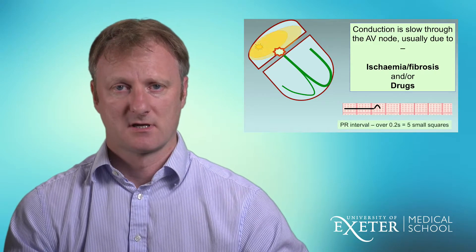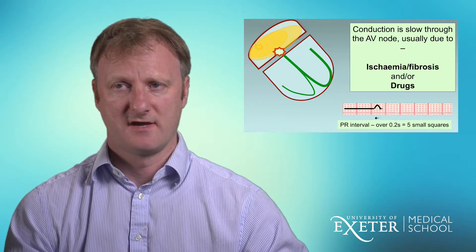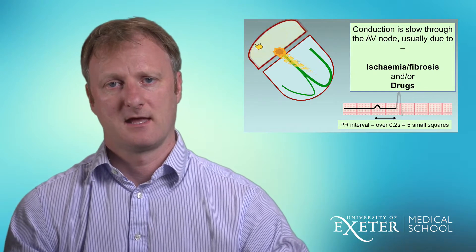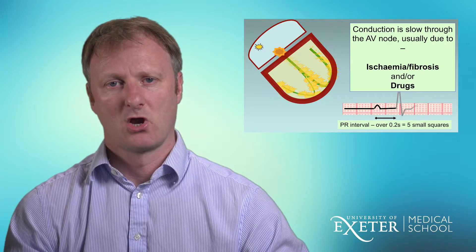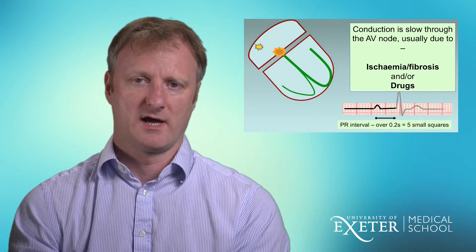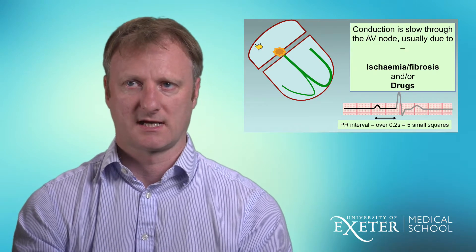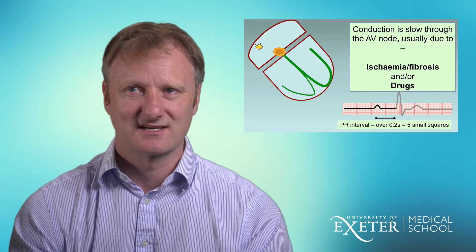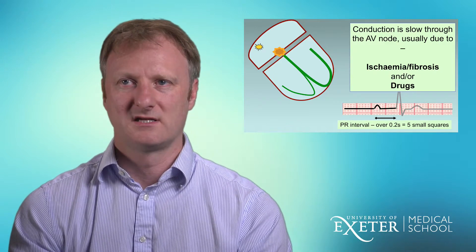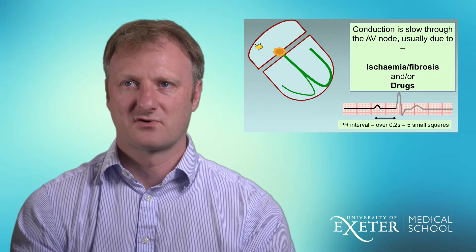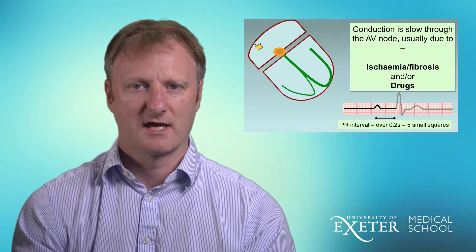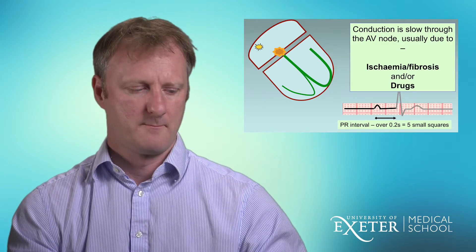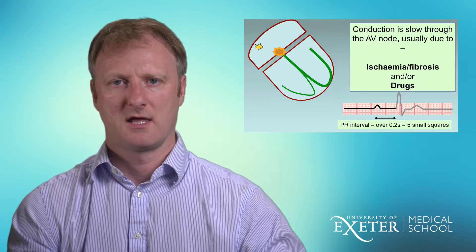When the AV node is stimulated by a P wave, it takes longer than five small squares — i.e. longer than 200 milliseconds — to activate the ventricle. In this example the PR interval is probably eight to nine squares, so over 320 milliseconds. This is a long PR interval.